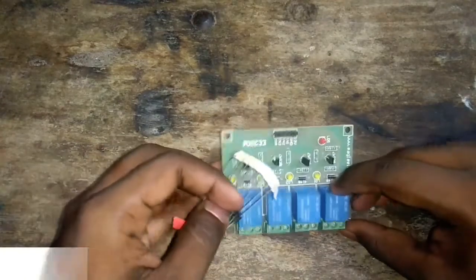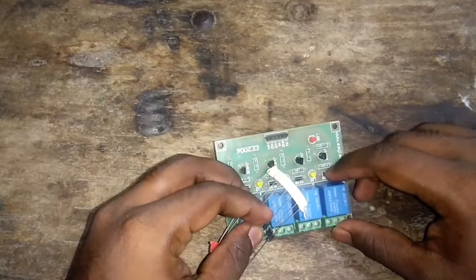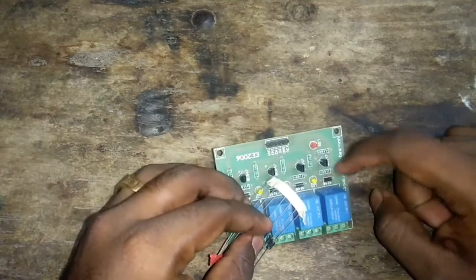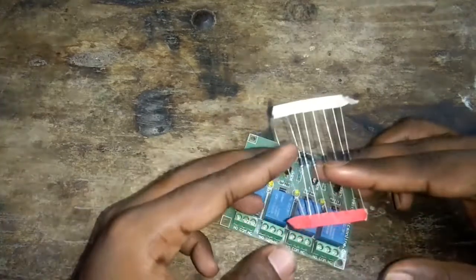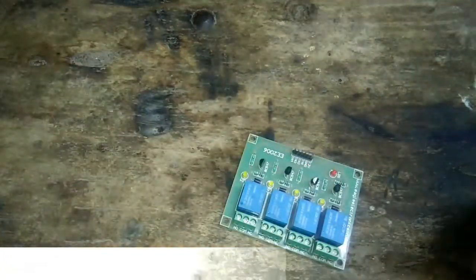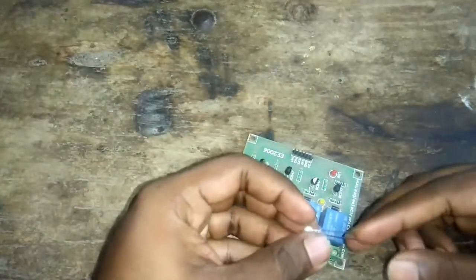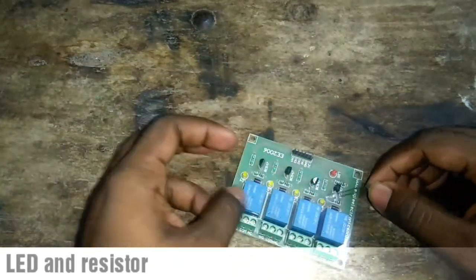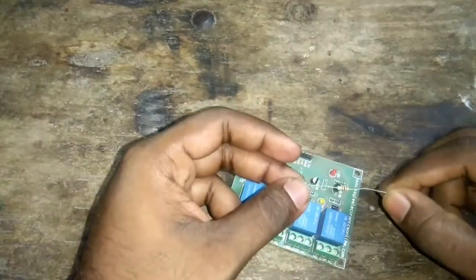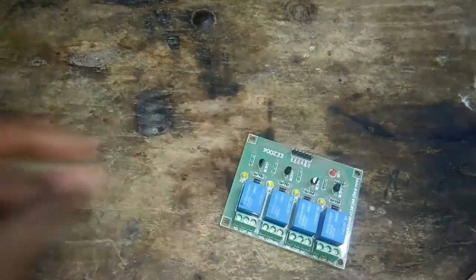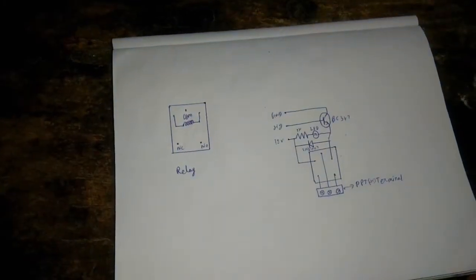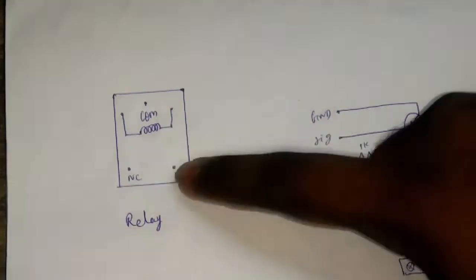If you look at this, we use an IN4007 diode for reverse current protection. Then we have a BC547 transistor, an LED for on/off indication, and a resistor. So this is the circuit — this is the relay and these are the internal connections.